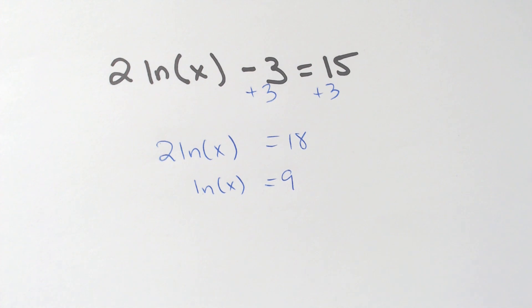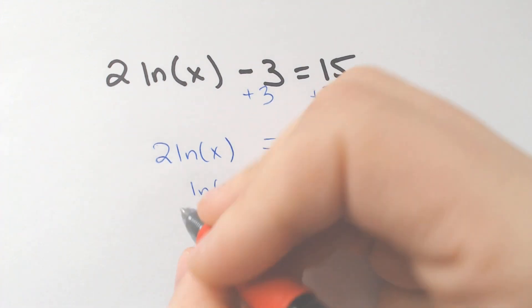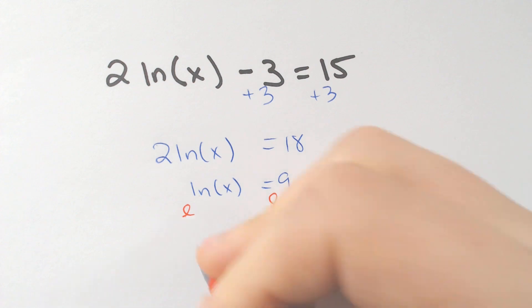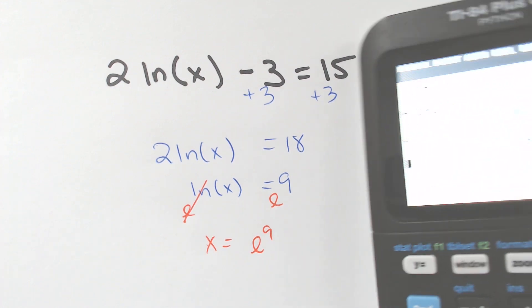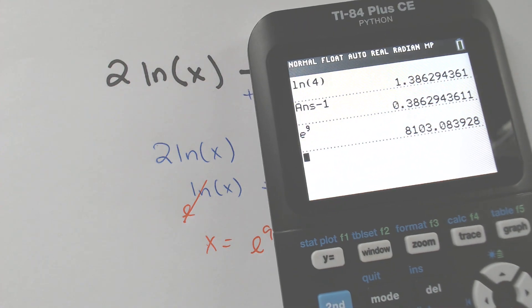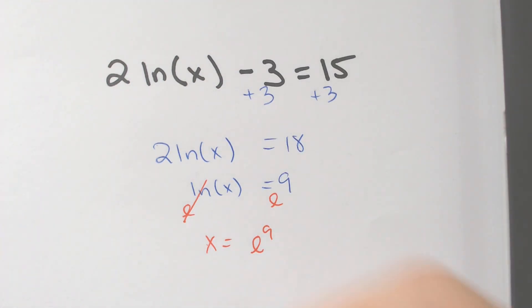And then from here to get rid of the LN, you E both sides. We E both sides. We get X equals E to the 9th power. So E to the 9th power is really big, just so you know. E to the 9th power is probably in the thousands. It is 8,103.08. 8,103.08.